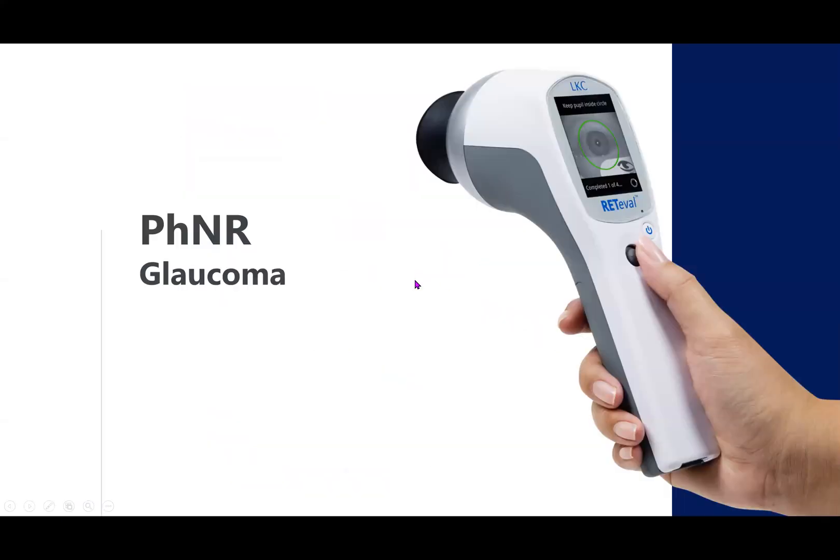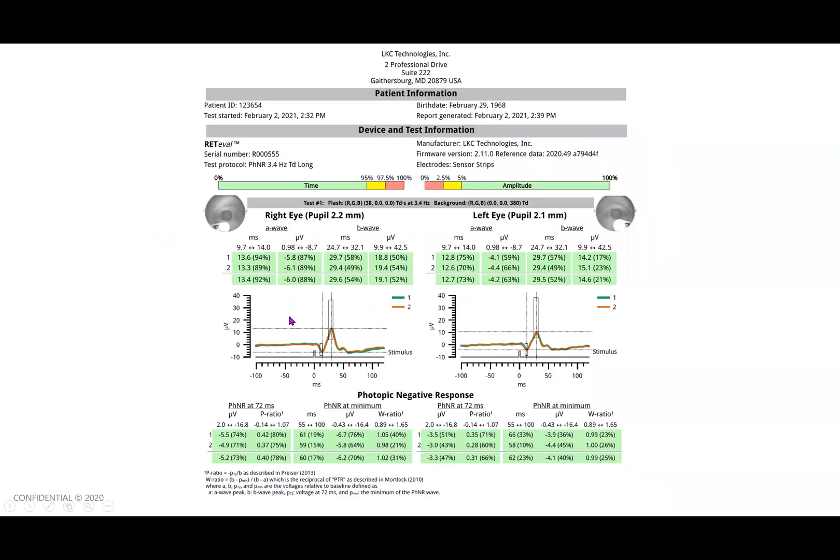The next test is the photopic negative response, which is a test that's generally used for glaucoma. You can see here waveform looks a little bit different. The first two tests use a high frequency flicker or high frequency flash. And it doesn't really give the retina a chance to recover after each flash. So you see a different looking waveform, more like a roller coaster. This test has a lower frequency flashing, giving the retina a chance to recover after each flash. So you get a more traditional A wave, B wave, PhNR.